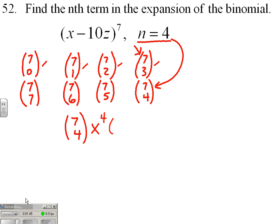So how many negative 10z factors do I need? I need to make up the difference from 7 to 4. I need 3 of those.